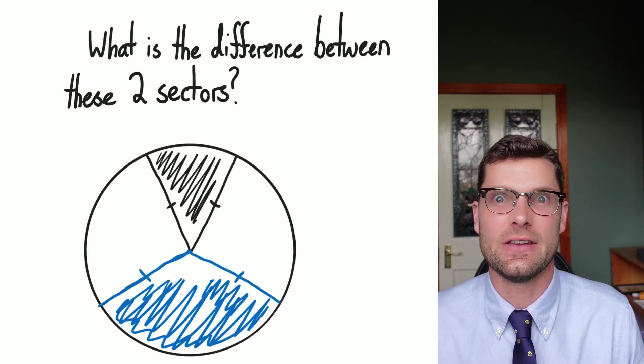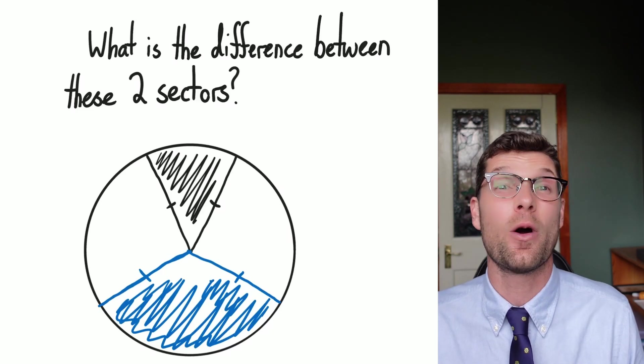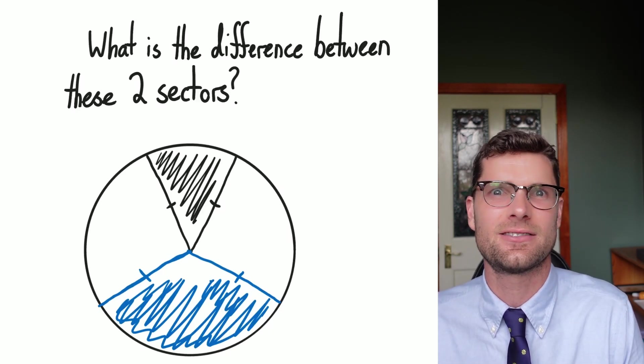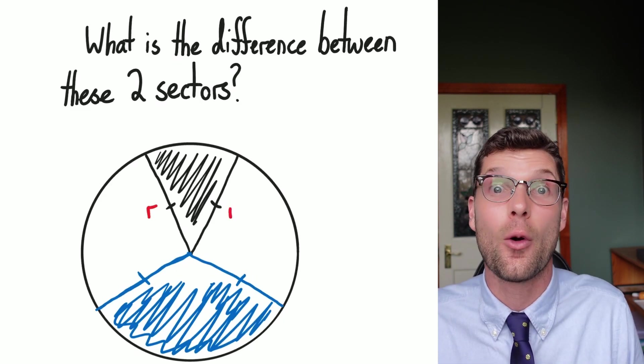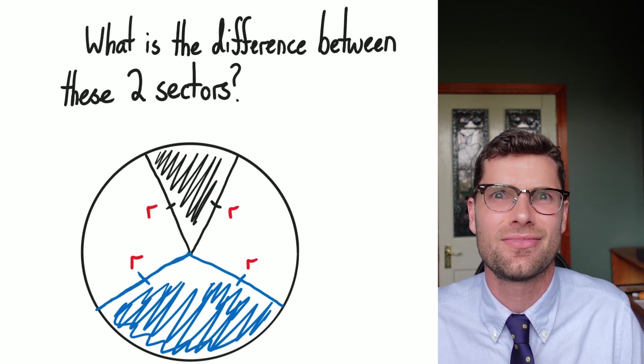So if we had a look at this, I've got two sectors drawn onto a circle and I want you to tell me what is the difference between the two. The first thing we've got to recognize is that the radius can't be different for either of these sectors. It must be the exact same because that's the definition of a radius.